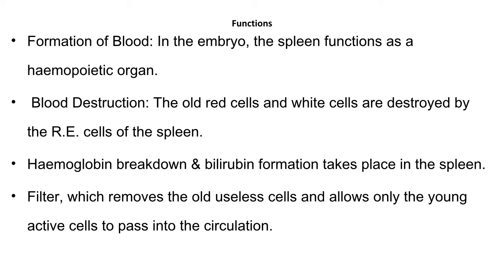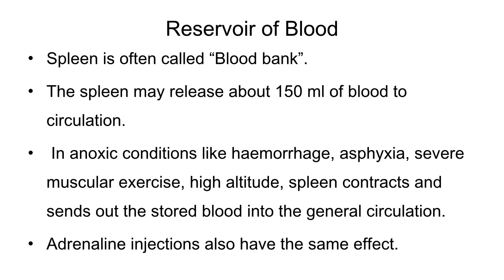The spleen usually filters and removes old useless cells, allows young actively growing cells to pass into the circulation, and removes antigens present in the blood. Another important function of the spleen is to store the blood, and therefore the spleen is also referred to as the blood bank of the body. Under anoxic conditions like hemorrhage, severe muscular exercise, or at high altitudes, the spleen has an ability to release around 150 ml of blood, mainly erythrocytes, into the circulation.